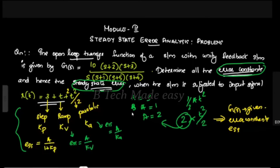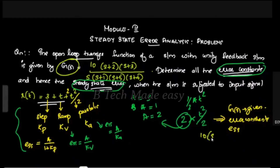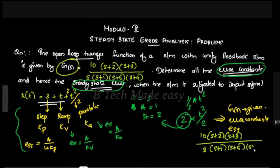Now let's determine the type of the system. The open-loop transfer function G(s) is given by 10(s+2)(s+3) divided by s(s+1)(s+5)(s+4). We will identify the type based on the number of poles at the origin.